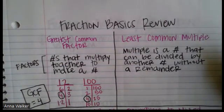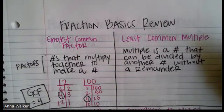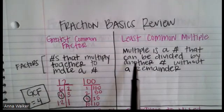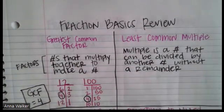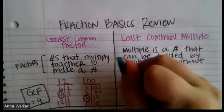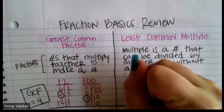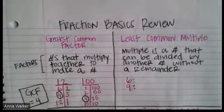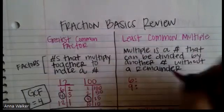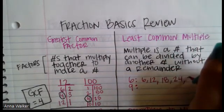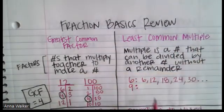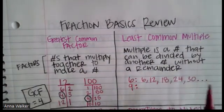The next concept is the least common multiple, which will come into play in the next few videos when we talk about fraction operations. A multiple is a number that can be divided by another number without a remainder. Another way to think about it: if I count by sixes — 6, 12, 18, 24, 30 — that whole list I'm making is called multiples, because they're multiples of six.